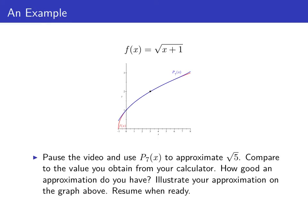Taylor polynomials are used to approximate functions for values of x close to the base point. Let's use p sub seven of x to approximate the square root of five. Pause the video, make this calculation, compare the value you obtain to what your calculator gives for the square root of five, and illustrate your approximation on the graph.